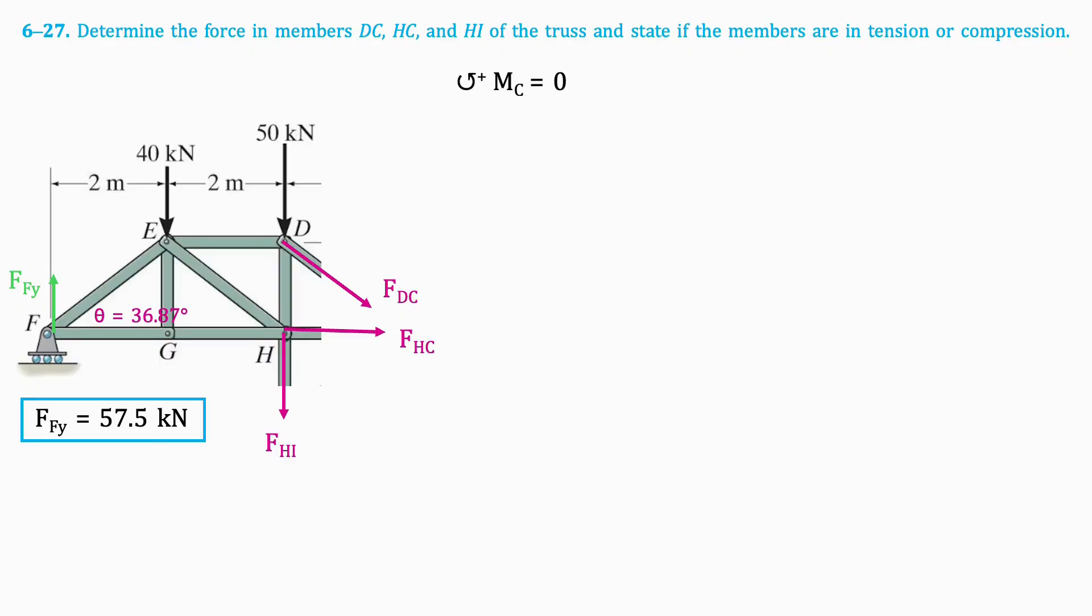Next, we'll take the moment about point C. The resulting equation is as follows, which when isolated for FHI results in 42.5 kN in tension.